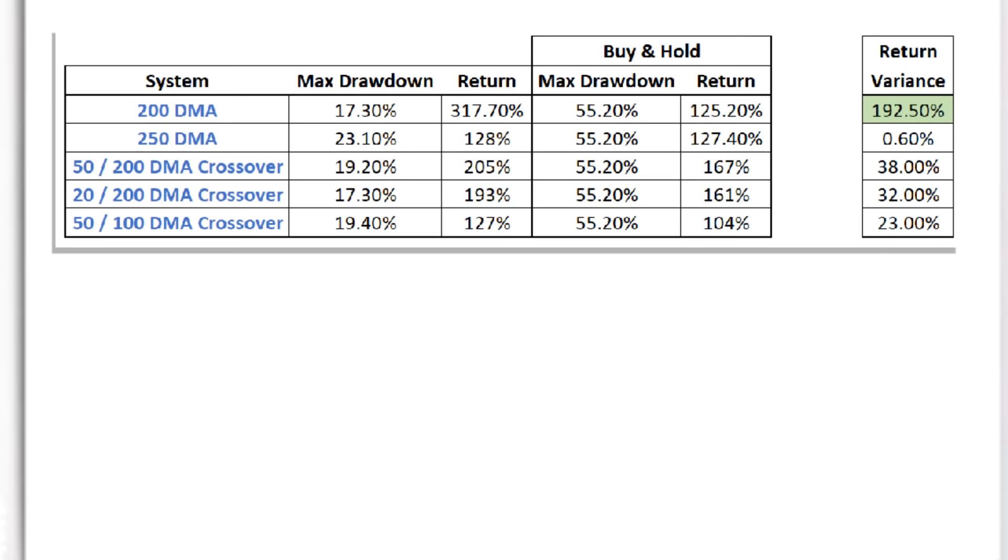We can summarise each of the moving average systems here. The best excessive return over a buy and hold strategy was the simple 200 day moving average with an excess return of 192% and a maximum drawdown of 17.3%, making this the most appealing strategy of them all.